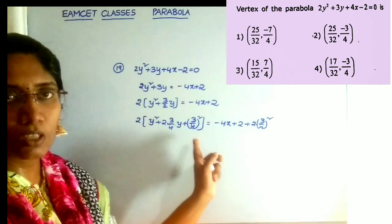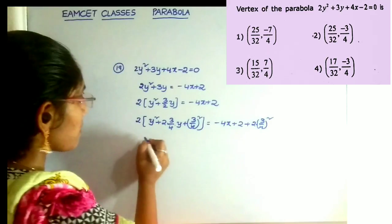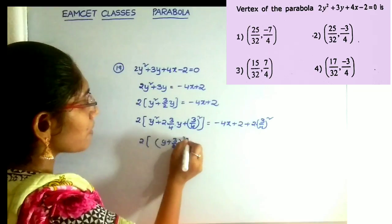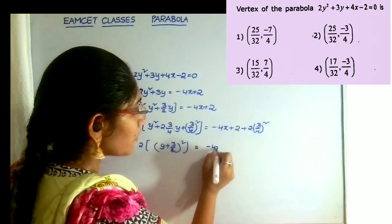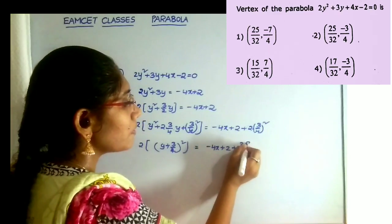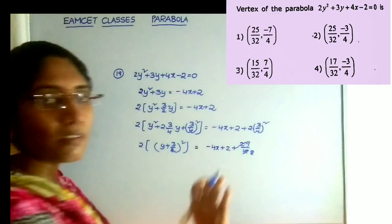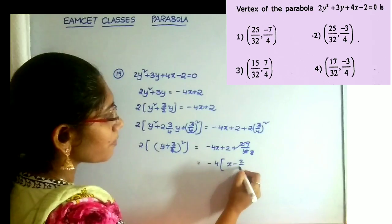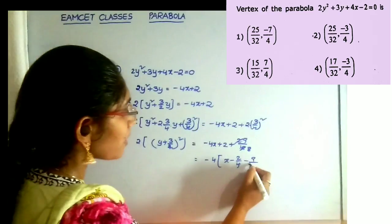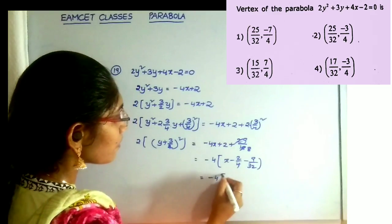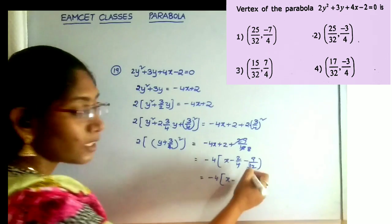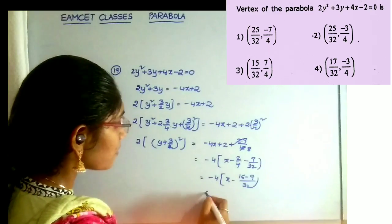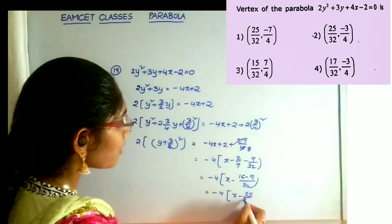Adding the value 2 into (3/4)² to both sides, the left side becomes 2 into (y plus 3/4) whole squared. The right side becomes minus 4x plus 2 plus 2 into 9/16, which is 2 times 9/16, that is 9/8. Taking minus 4 common from the right side gives minus 4 into x minus 2/4 minus 9/32. Taking 32 as LCM, we get minus 4 into x minus (16 minus 9)/32, that is minus 4 into x minus 25/32.